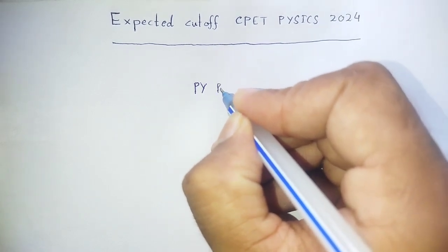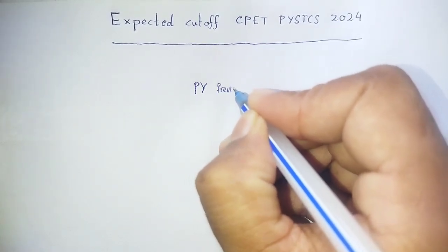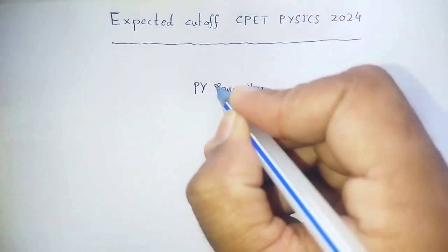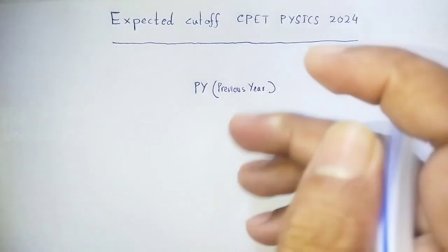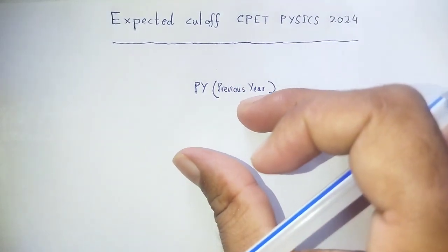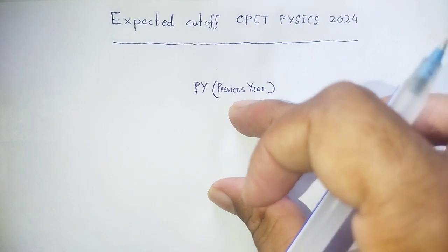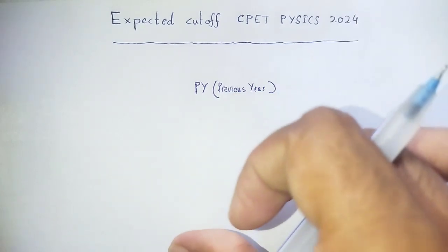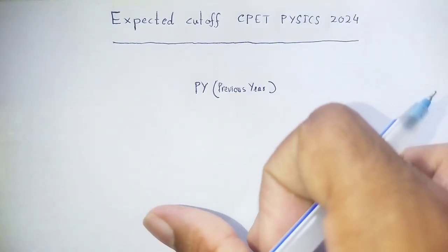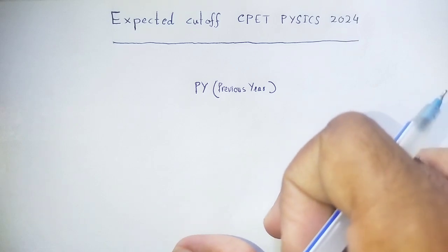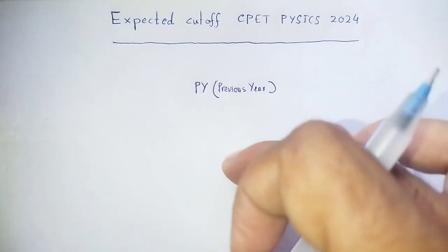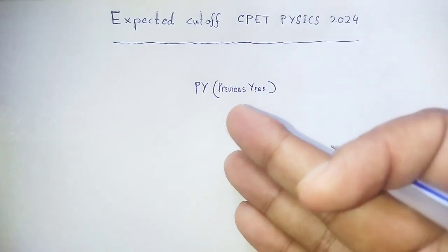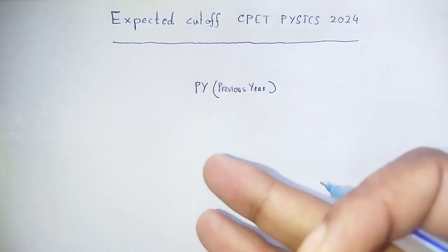That stands for previous year — previous year question pattern, question level, question type. Based on the previous year's question pattern and level, we determine how to estimate the current year's expected cutoff.